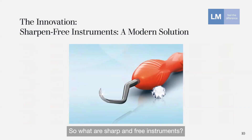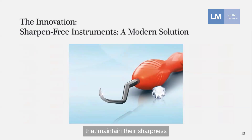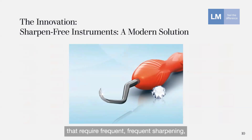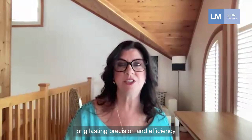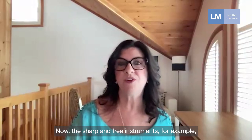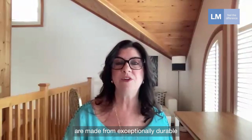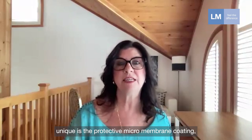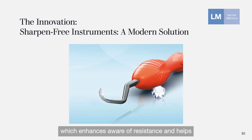Sharpen-free instruments are designed with advanced metal alloys that maintain sharpness for the entire lifespan of the instrument. Unlike traditional instruments that require frequent sharpening, these are engineered to provide long-lasting precision and efficiency. LM sharpen-free instruments, for example, are made from an exceptionally durable special metal alloy. What makes them unique is a protective micro-membrane coating which enhances wear resistance and helps maintain excellent sharpness and control throughout use.